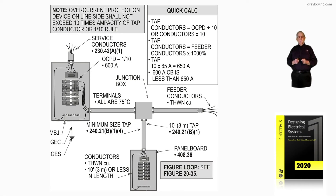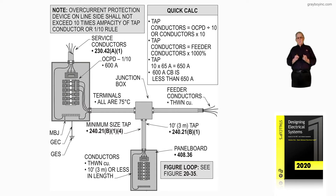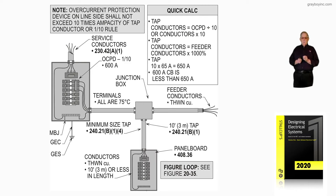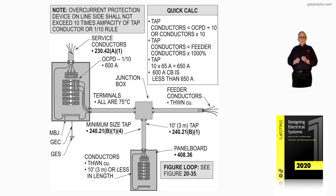This illustration deals with tap rules. For example, look at the service equipment to the left. As the installer or the designer, if you were making a tap ahead of the main that you see in that service equipment, you would go to 230.82 of the code and see if the tap you were making fell within 230.82. And if it did, you can make the tap.